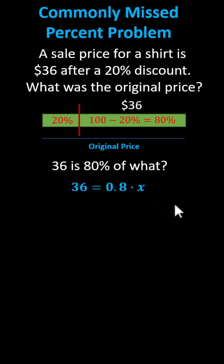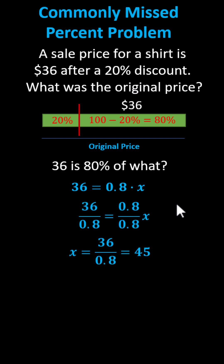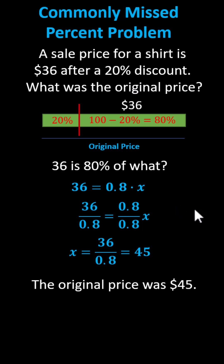To solve for x, we divide both sides by 0.8. Simplifying, we have x equals 45, which indicates $45 is the original price of the shirt. I hope you found this helpful.